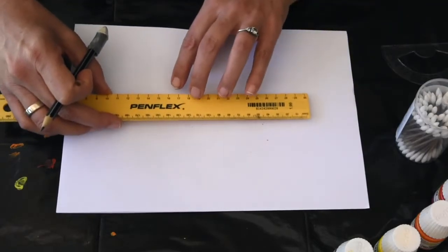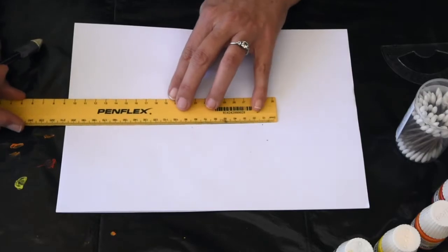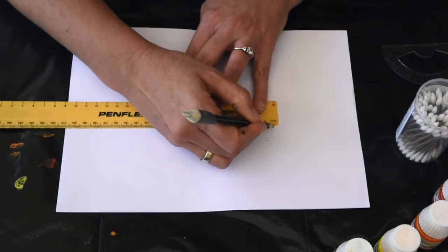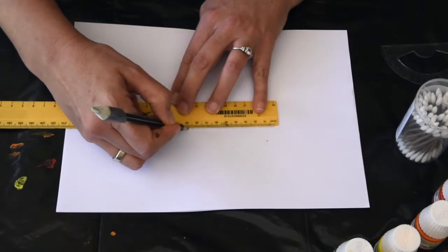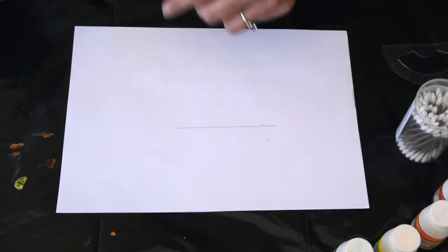Another thing you can do with angles is you can draw a line. We're going to draw a line that is 10 cm. So from there to there is 10 cm.